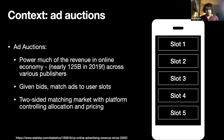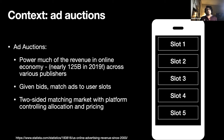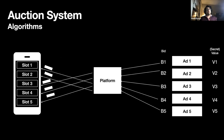So what's the context? Ad auctions. You're here at WebConch, so you probably know that ad auctions are really important in the online economy, powering a ton of the revenue. And so what do they do? Basically, you can think of ad auctions as forming a sort of two-sided matching market. They're given some bids by advertisers, going to match ads to slots — these are slots where the users will see the ads.